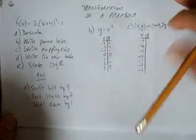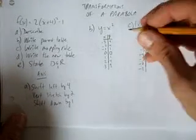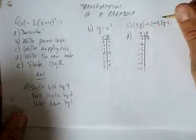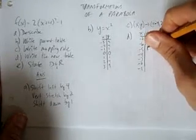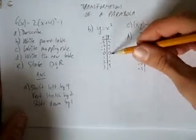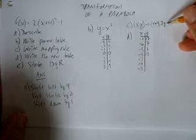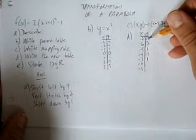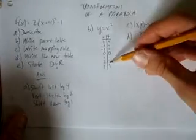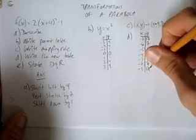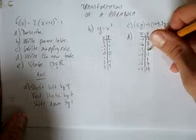Now for the y's — take each y, times it by 2, and take away 1. We're on step D now. 9 × 2 = 18, minus 1 is 17. 4 × 2 = 8, take away 1 is 7. 1 × 2 = 2, take away 1 is 1. 0 × 2 = 0, take away 1 is -1. By symmetry, the other side will also be 7 and 17. Checking: 4 × 2 = 8, take away 1 is 7; 9 × 2 = 18, take away 1 is 17. Just verifying the work was done correctly.